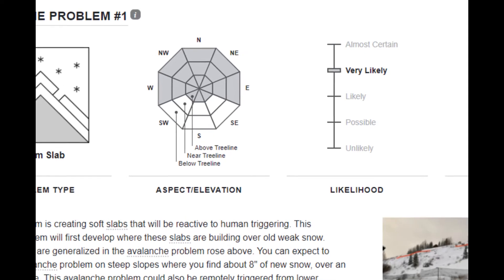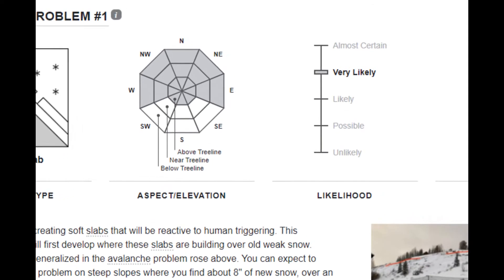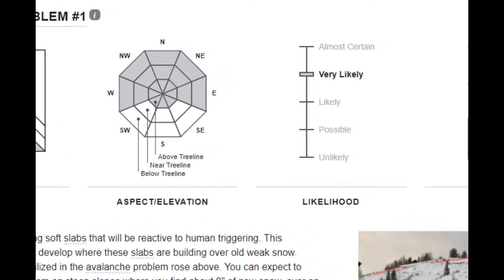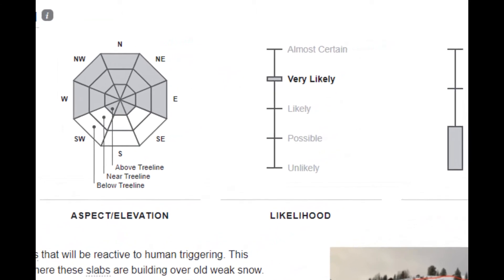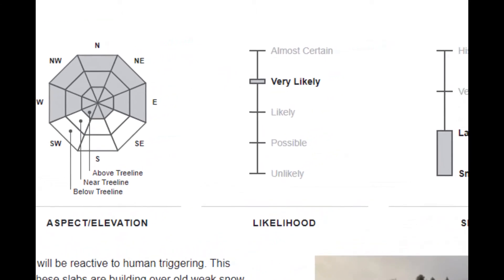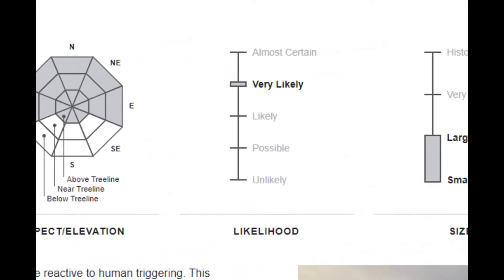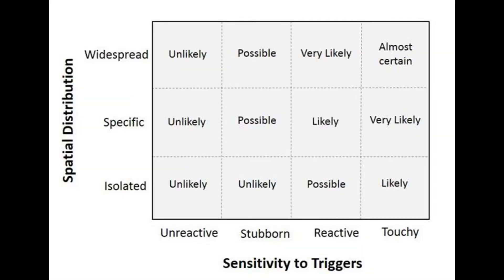The likelihood slider highlights the chance of an avalanche releasing within the specified distribution and time period. Likelihood is defined by the sensitivity to triggers and how commonly the problem is found throughout the terrain.